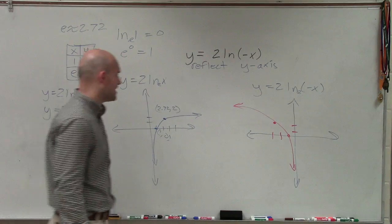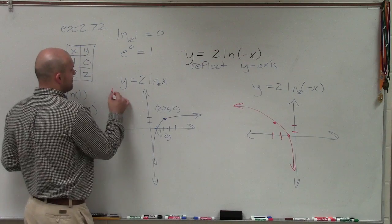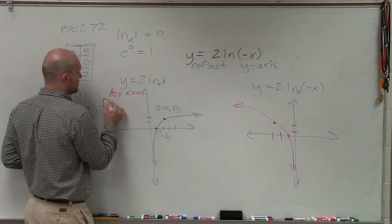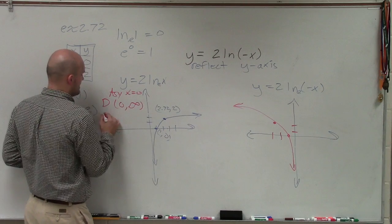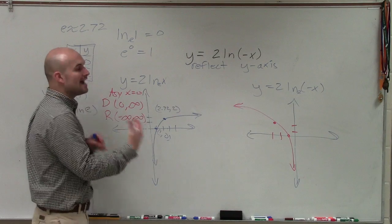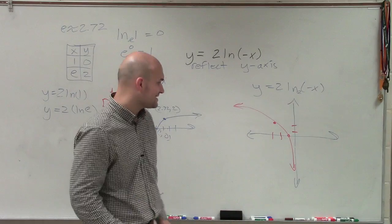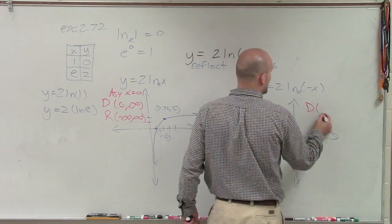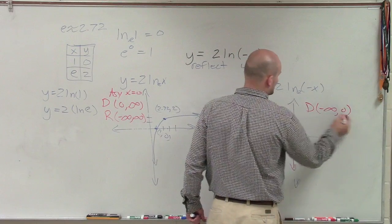And what's very nice about this is you can see over here, my asymptote is at x equals 0. My domain is all positive numbers. So it's going to be from 0 to infinity. And my range is from negative infinity to infinity. Well, when I reflect the graph over the y-axis, you can see now my domain is all negative numbers. So my domain now is from negative infinity to 0.